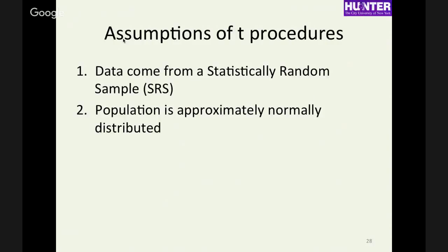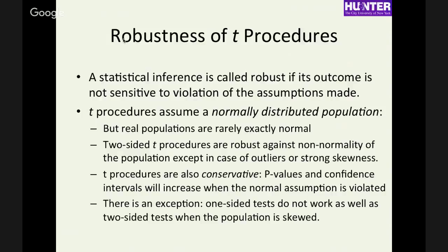So, just to summarize the assumptions, we still have to assume data come from a statistically random sample from a population that is normally distributed, unless we have some very large sample size. These procedures are what we call robust in that the outcome is not too sensitive to the assumptions made. Particularly, it's not too sensitive to this assumption of a normally distributed population. So, it's not too sensitive. And additionally, it tends to be conservative in the, if that assumption is violated, it will tend to result in us giving a confidence interval that is too large, or a p-value that is too large. It won't tend to make you too sure of your results. You'll be not sure enough of them. With the exception that one-sided tests tend not to work well if the assumption of normality is violated.